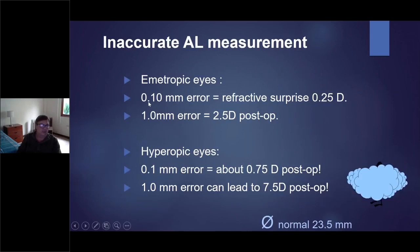If you make an error of 0.1 millimeter in emmetropic eyes, you get a refractive surprise of 0.25 diopters - it's nothing. But if you make an error of 1 millimeter because you are not sure where is the cornea, you can get a post-operative refractive surprise of 2.5 diopters in emmetropic eyes. It is worse in hyperopic eyes. If you make an error of 0.1 millimeter, you get a post-operative error of 0.75 diopters. But if you make 1 millimeter error, you can leave a disaster of 7.5 diopters. This is too much, and it could be caused because you are using not a good method to make the biometry.